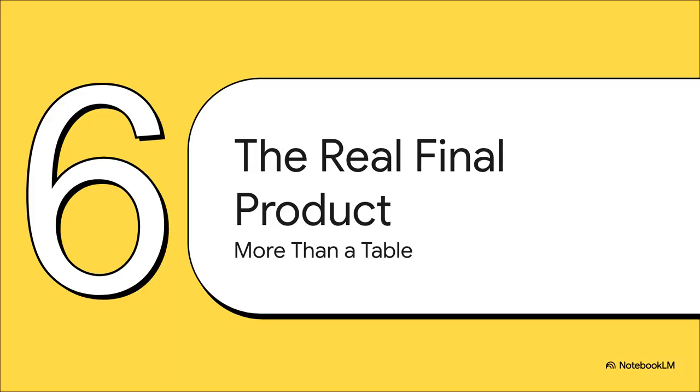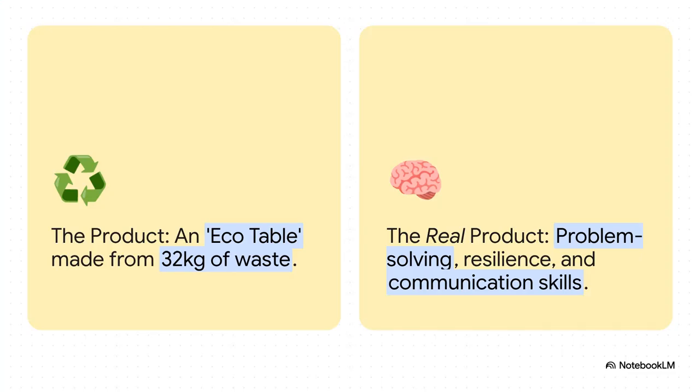So the student built a table. Story's over, right? Well, not even close. Because the physical object, the eco table itself, wasn't actually the most important thing that got created in this project. See, on the left you have the product you can touch: a table made from 32 kilograms of reused plastic waste. But over on the right, that's the real product. The table was just the project. The true outcome was the development of a whole new set of skills: creative thinking, systematic problem solving, knowing how to find and use information, being resilient when things went wrong, and communication. Those are the tools that will last a lifetime.